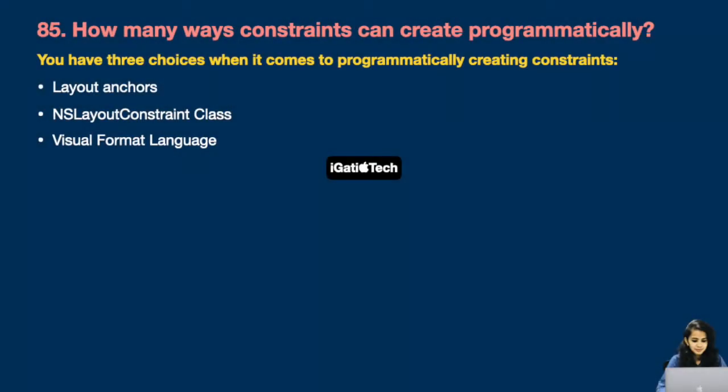Question number 85: How many ways can constraints be created programmatically? You have three choices when it comes to programmatically creating constraints: layout anchors, the NSLayoutConstraint class, and Visual Format Language.